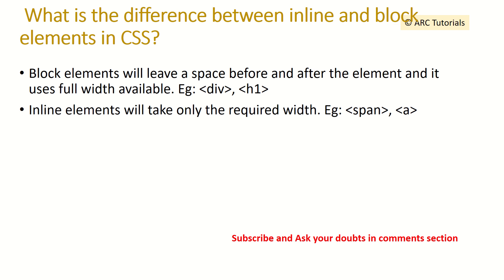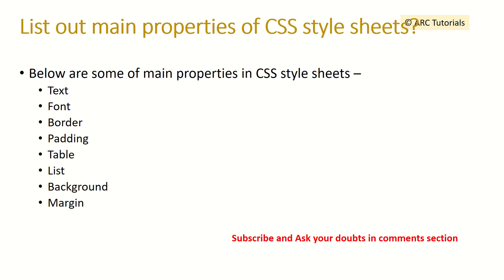What is the difference between inline and block elements in CSS? Block elements leave a space before and after the element and use full width — 100%. Some examples of block elements are div, h1, h2, and all heading tags. Inline elements only require the width occupied by the content size — for example, an anchor link or a span element. This is a very important question that is often asked.